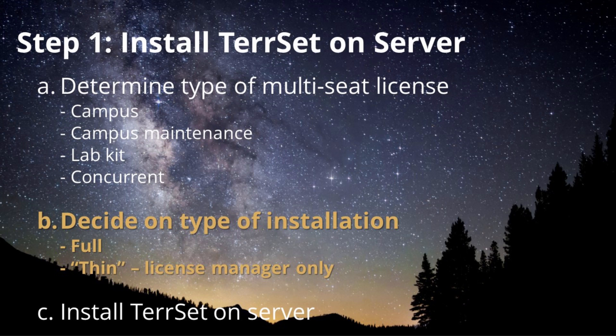Once you've determined what operating system your server needs to be running, you should decide on what type of installation you wish to do on the server. You can choose to install the full Tearset program or do a thin installation, installing only the license manager. If you want to operate the full Tearset program on the server, choose the full installation. If you plan to use the server only to contain and manage the Tearset license, you can do the thin installation.